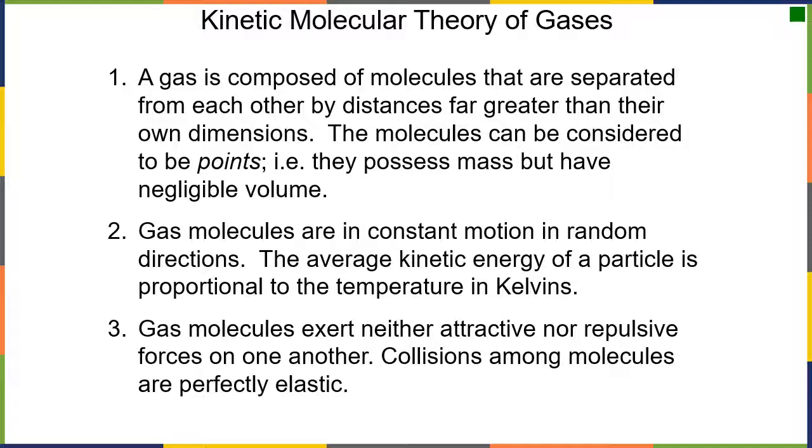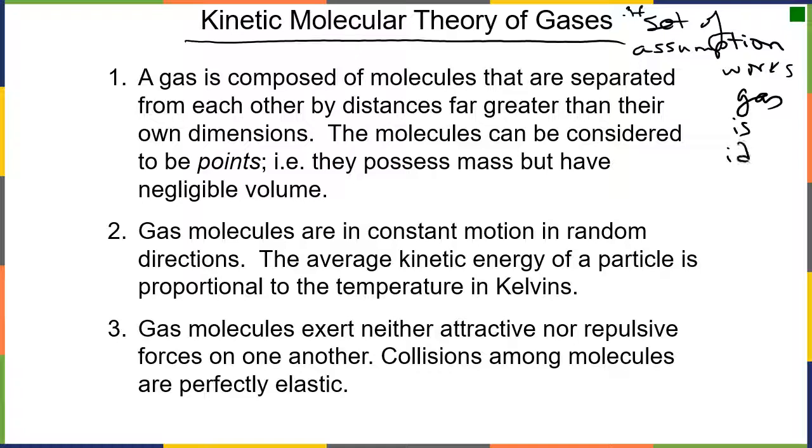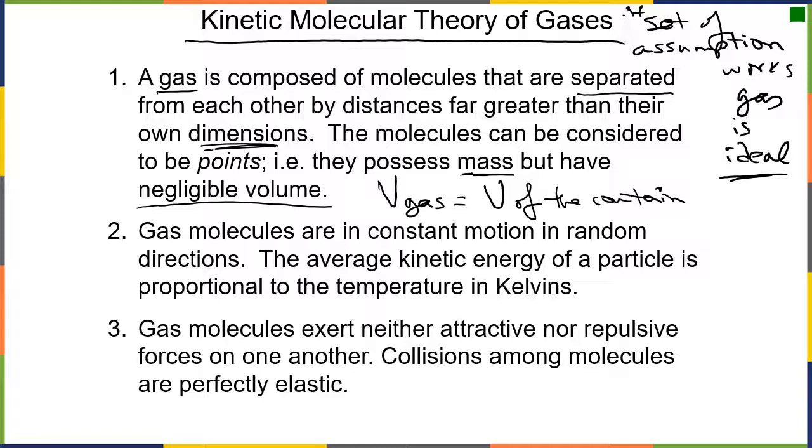Now we have a theory on this. The kinetic theory of gases is simply a set of assumptions. If a gas follows these assumptions, we say the gas is ideal. We like ideal gases because our simple equations work. First assumption: gas molecules are separated from each other by distances far greater than their own size. This means gas molecules have mass, but because they're so tiny, they have negligible volume. The volume of a gas equals the volume of the container, and we ignore the volume of individual gas molecules.